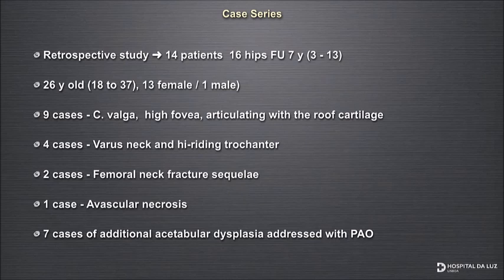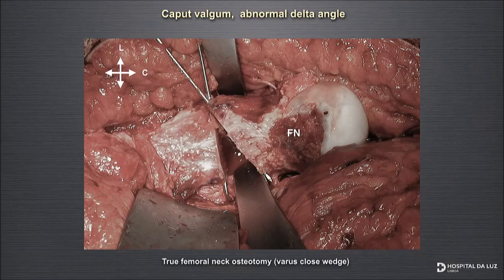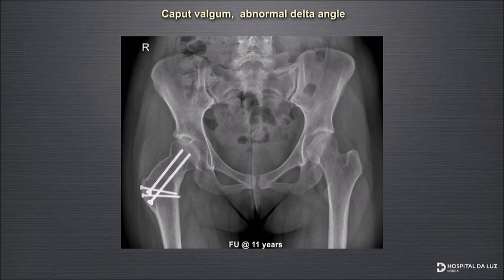This is a case where the acetabular parameters are normal, but the patient has a very high-riding fovea, diminishing the contact area between the two surfaces — an upside-down dysplasia where the problem is on the femoral side, not the acetabular side. We decided to do a correction: a closed-wedge neck osteotomy. This is the final result at 11-year follow-up. Putting the trochanter too low was a mistake at the time, but the joint line is quite good and the patient is happy.